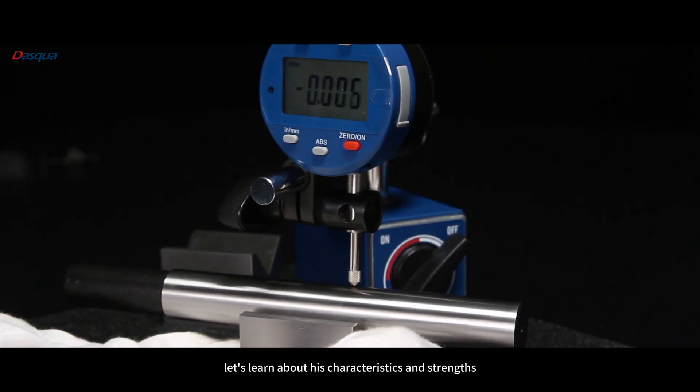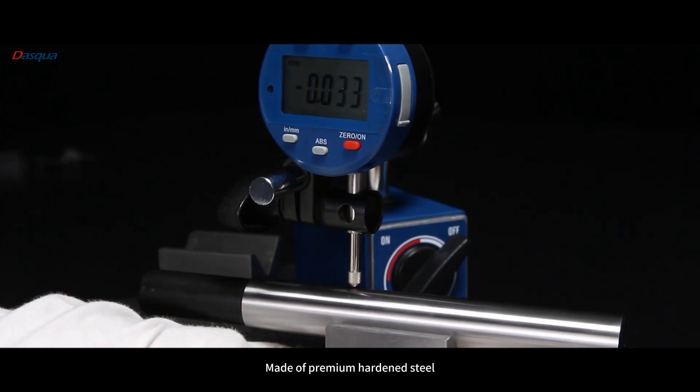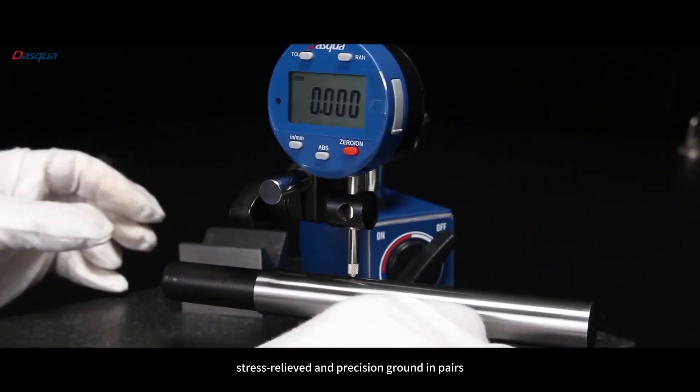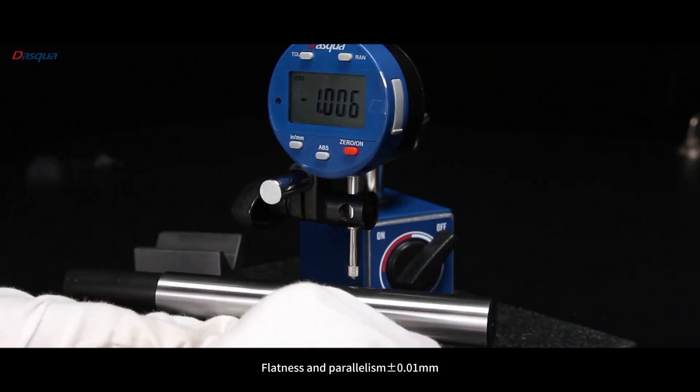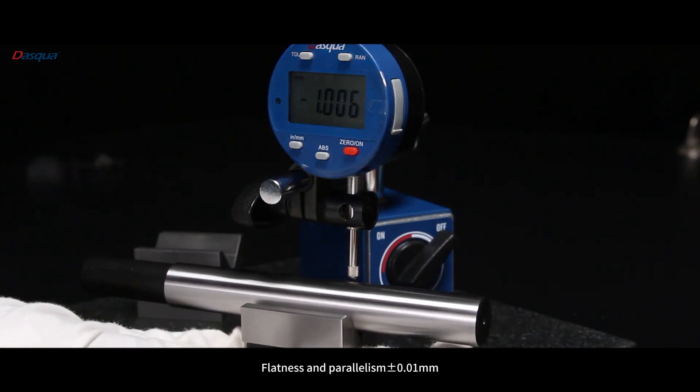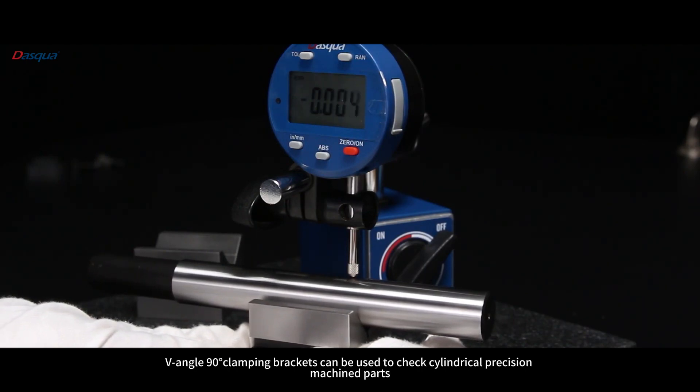Next, let's learn about its characteristics and strengths. Made of premium hardened steel, stress-relieved and precision ground in pairs. Flatness and parallelism 0.01 millimeters. The angle 90 clamping brackets can be used to check cylindrical precision machined parts.